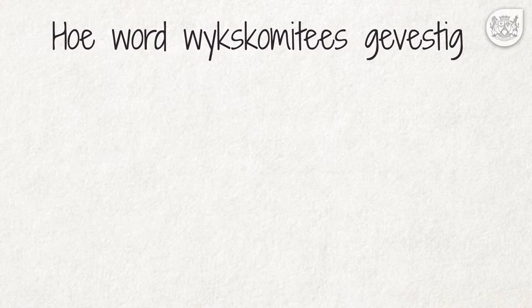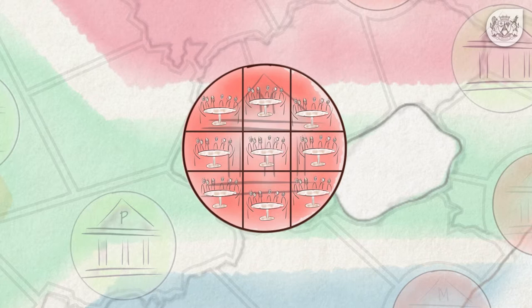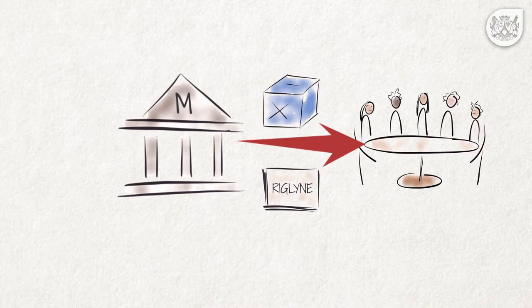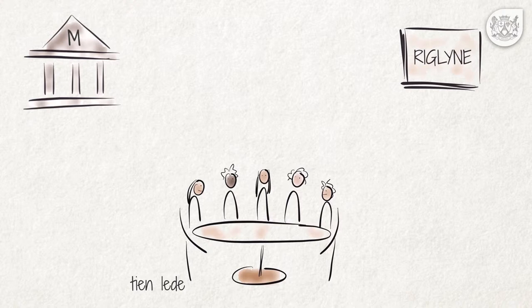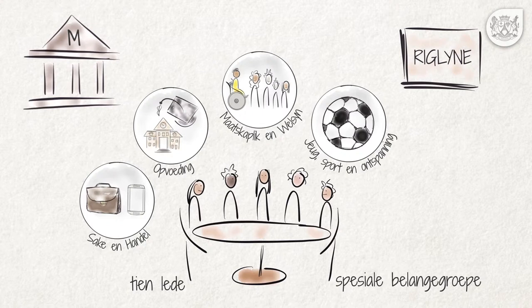'n Munisipaliteit het die bevoegdheid om te besluit of dit wykskomitees sal hê, en as dit so besluit, moet dit wykskomitees vir alle wyke binne sy grense instel. Die munisipaliteit besluit ook, volgens amptelike riglyne, oor die proses waarvolgens wykskomiteelede gekies word. Wykskomitees mag tot 10 lede hê, moet vroue insluit, en mag ook verteenwoordigers van spesiale belangegroepe insluit, byvoorbeeld sake en handel, opvoeding, maatskaplik en welsyn, jeug, sport en ontspanning, en vroue se regte.